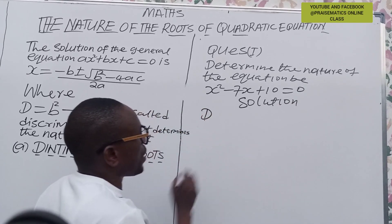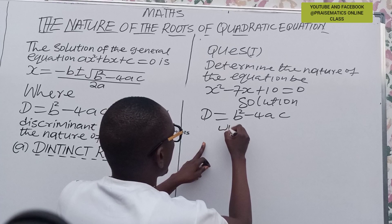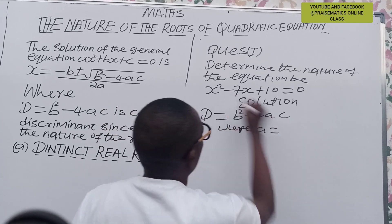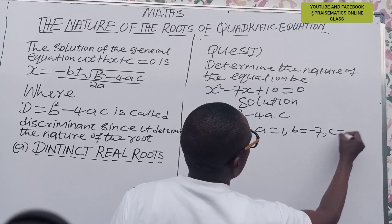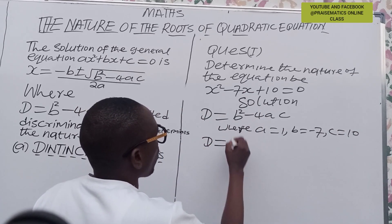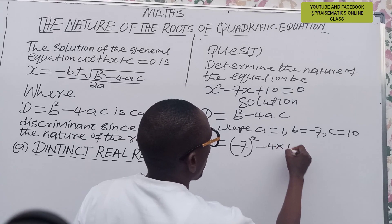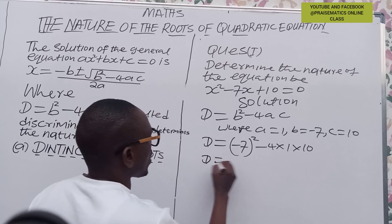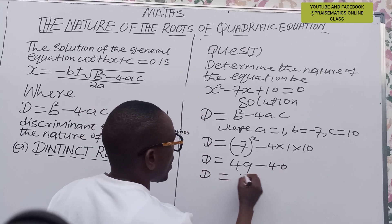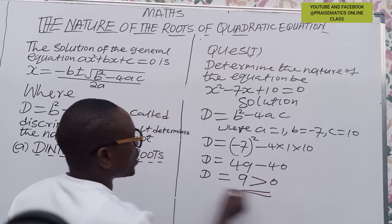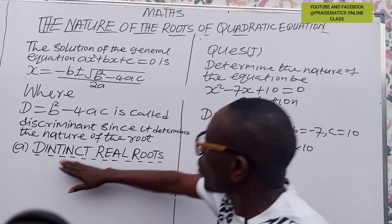Recall that the discriminant D = b² − 4ac. From the equation x² − 7x + 10 = 0, we identify a = 1, b = −7, and c = 10. Substituting: D = (−7)² − 4(1)(10) = 49 − 40 = 9. Since D = 9 is greater than zero, this equation has distinct real roots.